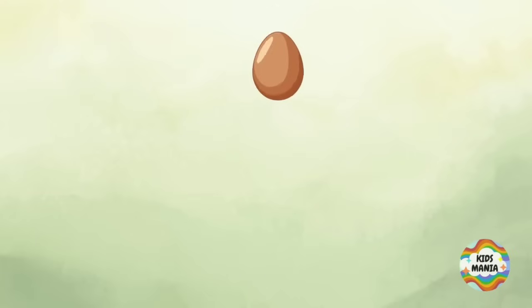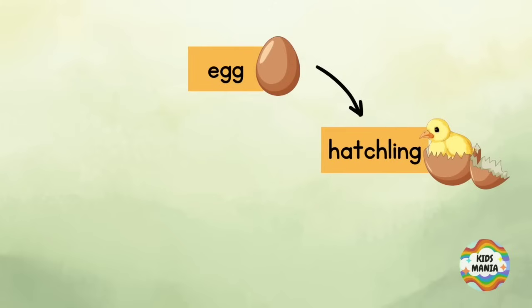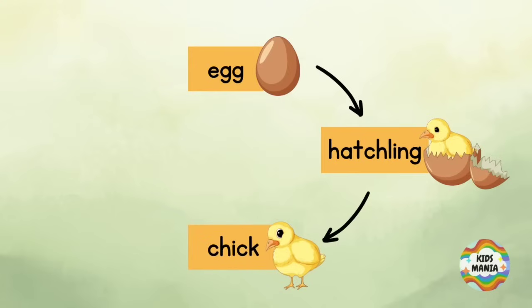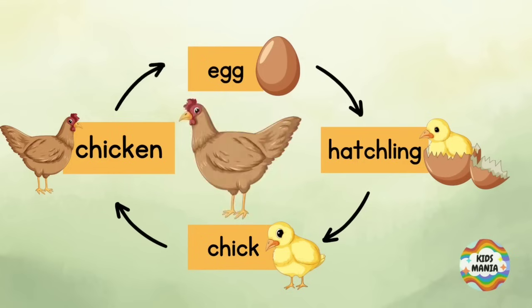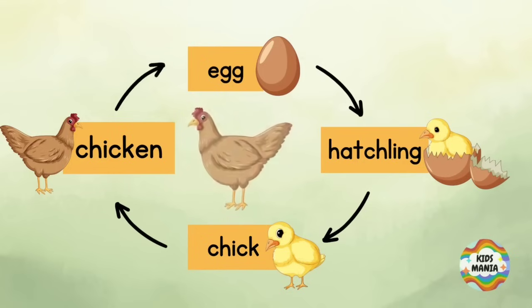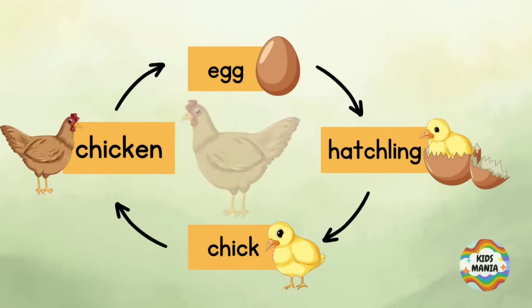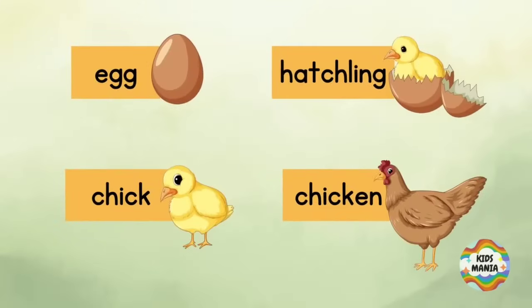Now let's repeat the chicken life cycle's four stages. The mother hen lays an egg, then keeps it warm for about 21 days until it becomes a hatchling. The hatchling comes out of the egg and becomes a cute chick. This chick grows into a chicken, then the chicken lays an egg, and this cycle keeps repeating. Can you name these four stages of the chicken life cycle? Now you try. Goodbye!